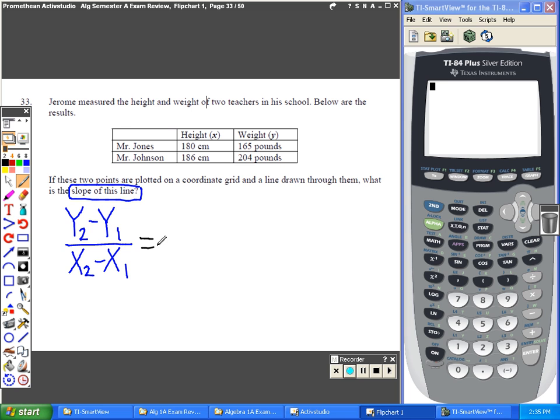Now you go to the table and fill in those values. Your y values I just circled in black. I'm going to write 204 subtract 165. Your x values I'm going to circle in red, and I'm going to write 186 subtract 180.